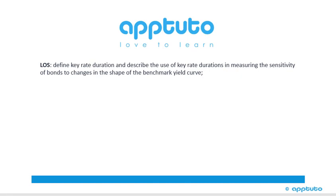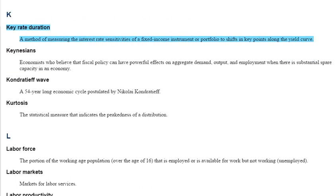This LOS is Define Key Rate Duration and Describe the Use of Key Rate Durations in Measuring the Sensitivity of Bonds to Changes in the Shape of the Benchmark Yield Curve. This Learning Outcome Statement is just a definition.